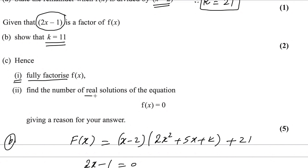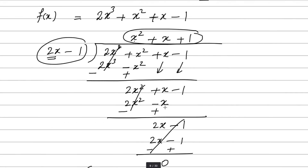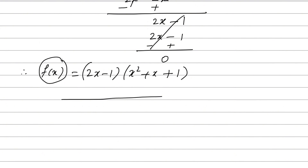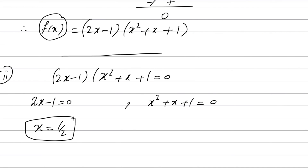Now find the number of real solutions of f(x) equals 0. Replace f(x) with 0: (2x minus 1)(x squared plus x plus 1) equals 0. From the first factor, 2x minus 1 equals 0 gives x equals 1/2. For the second factor, x squared plus x plus 1 equals 0 — since we cannot factorize it, apply the quadratic formula.